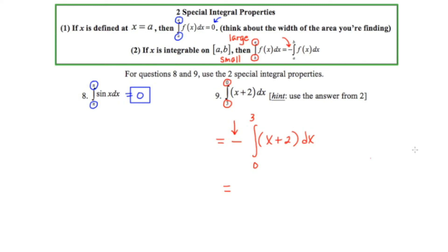Now the hint says to use the answer from number two. Well number two isn't something that we did in this video series it was something you were supposed to do on your own. So the answer to this question is going to be the opposite of whatever your answer was to number two.